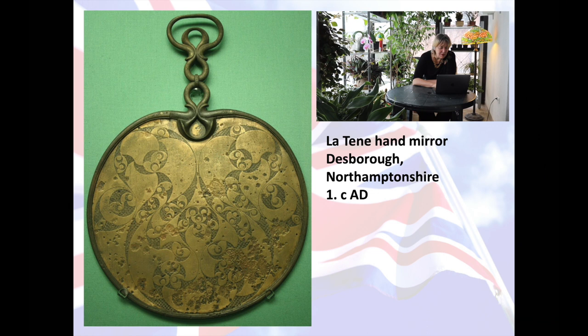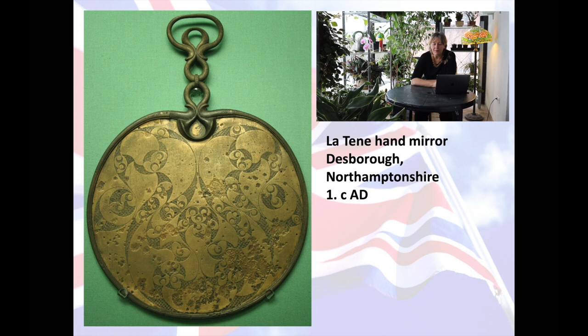Another object, also from Northamptonshire, is a hand mirror found in the village of Desborough. This is from around the first century AD — around the time when the Romans come to Britain — but the Celtic culture continues. If you look at the decorations on the back of the mirror: this was not a glass or crystal mirror but was made of polished metal, so one side was polished to a very reflective surface, and the other side was decorated with those quintessentially Celtic designs — beautiful geometric shapes.